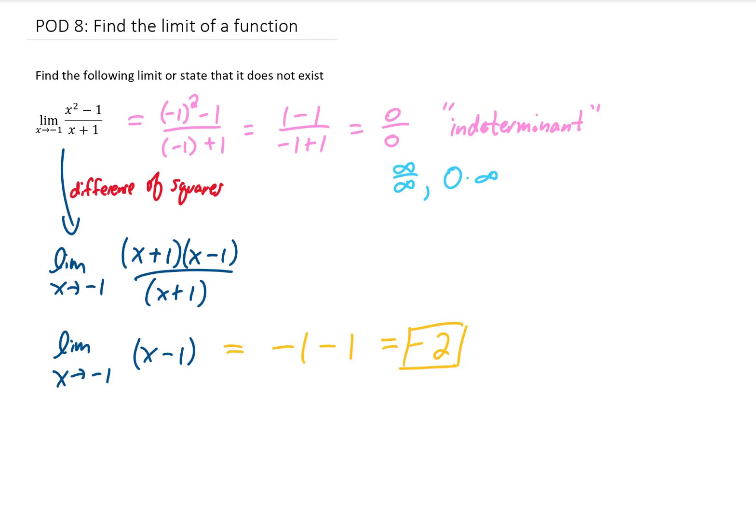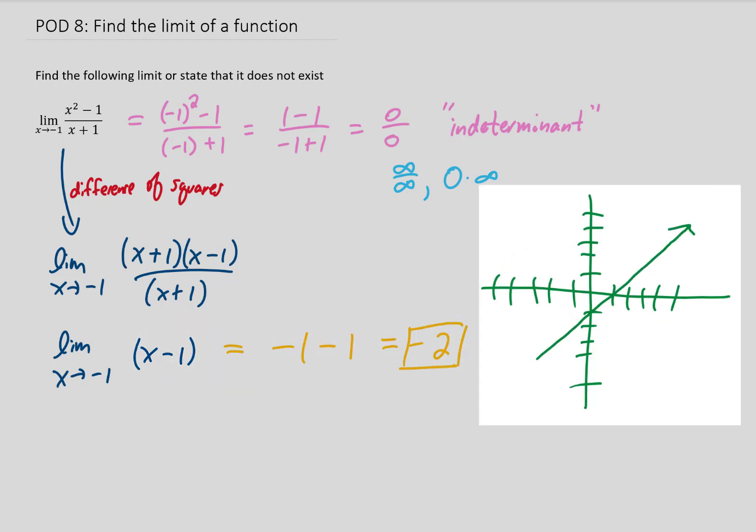So you might be wondering what just happened there maybe on a graph. So I'll really quickly try to give you an answer to that question. If we graph this original function up here, it would actually look just like this function that we got down here after our cancellation. This function down here is a line with a slope of 1 and a y-intercept of negative 1. So that line looks something like this.